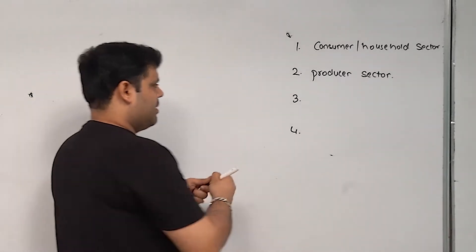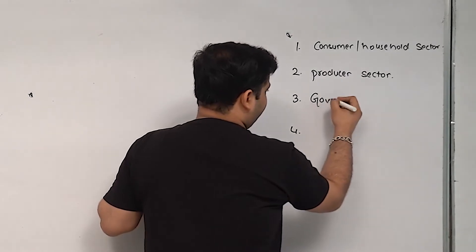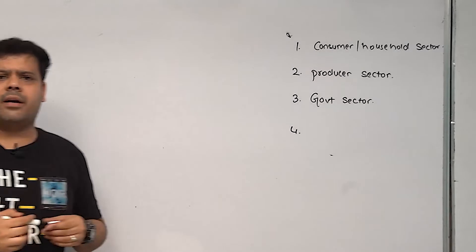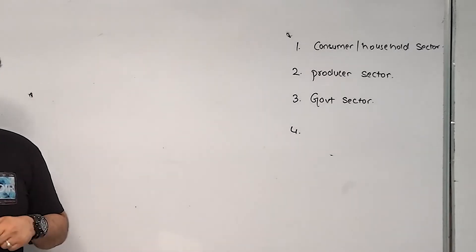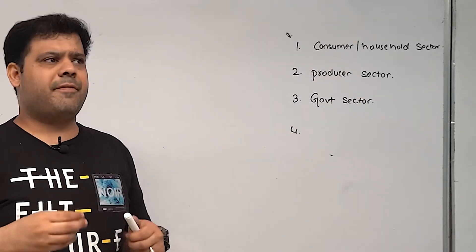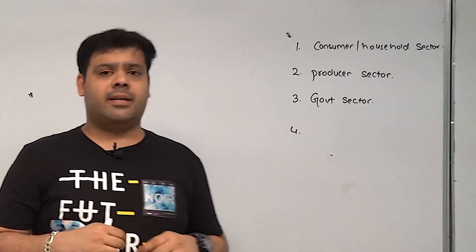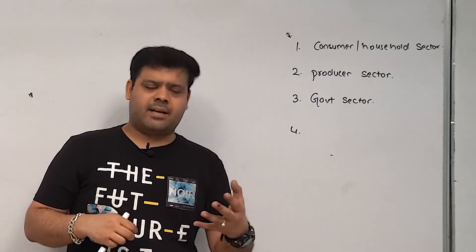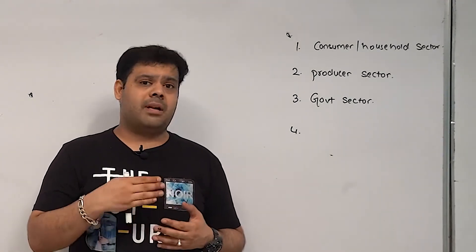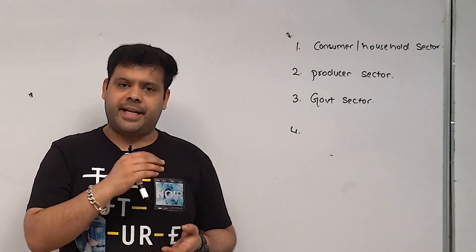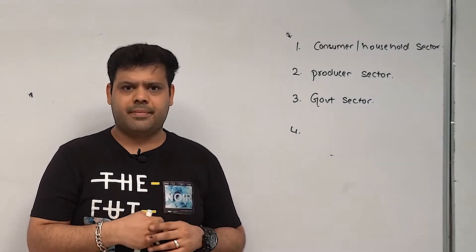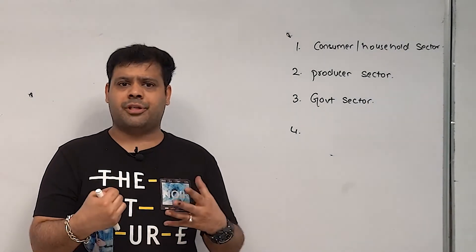Third is the government sector. In America, this sector's job is mainly to take tax, because there is a free economy. In India, the government deals with tax, subsidies, basic infrastructure, and can interfere in many matters where it sees fit. India's government can interfere in many matters — our constitution gives this authority.